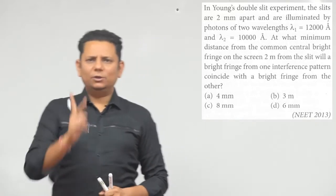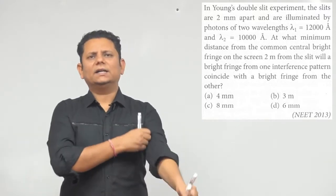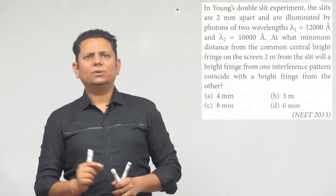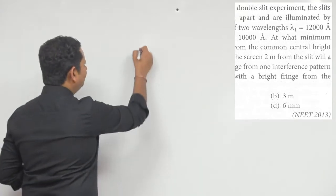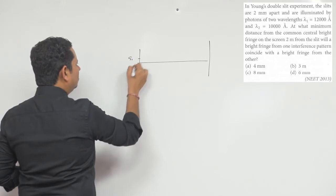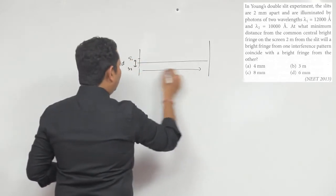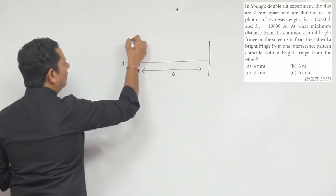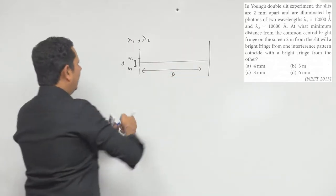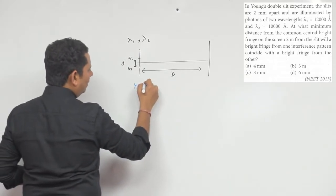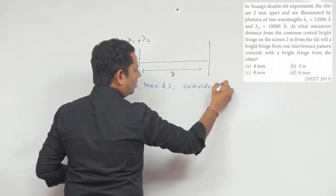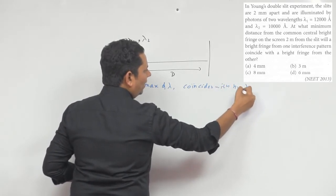This is a simple question. We have a YDSE setup with two slits S1 and S2, small d is the slit separation, and capital D is the screen distance. We use lambda 1 and then lambda 2. We say that n1th maxima of lambda 1 coincides with n2th maxima of lambda 2.